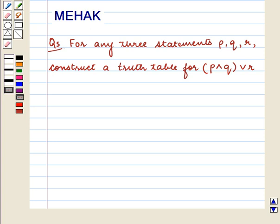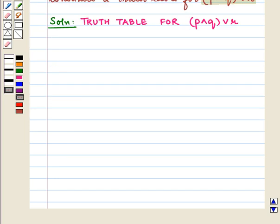Hello and welcome to the session. In this session we are going to discuss the following question: for any three statements P, Q, R, construct a truth table for P and Q or R. Let us proceed with the solution. We have to construct a truth table for the statement having symbolic notation P and Q or R.